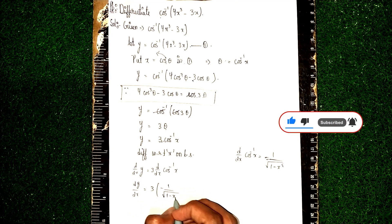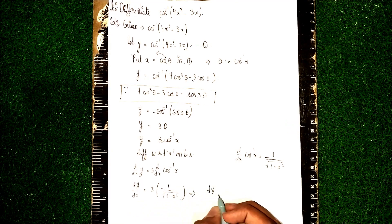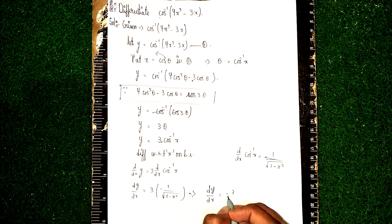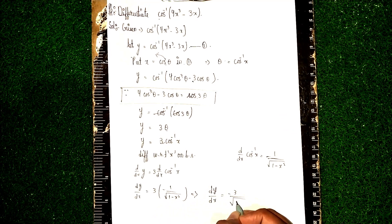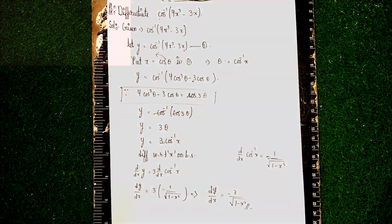So our answer is dy/dx equal to minus 3 by under root 1 minus x². This is our solution. This is our answer. Thanks for watching.